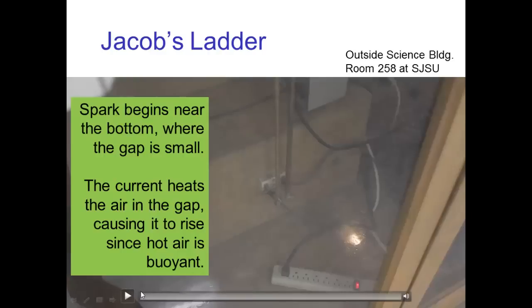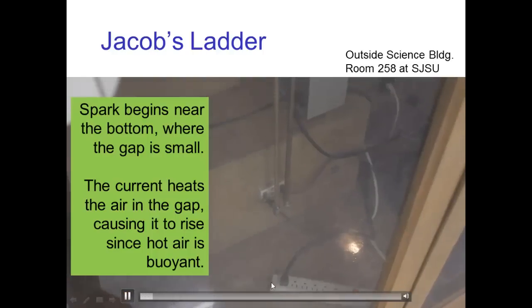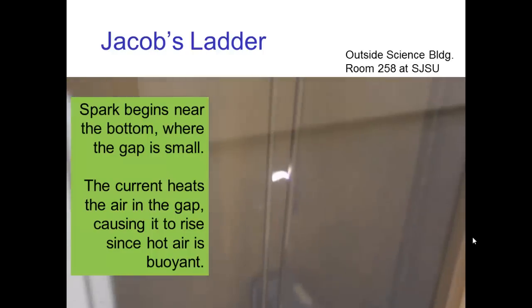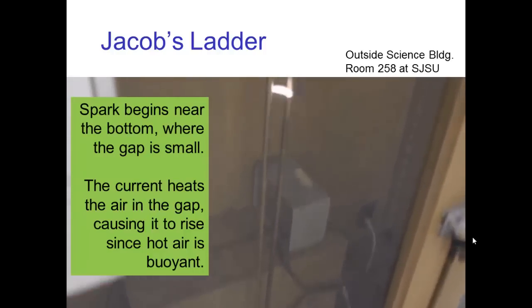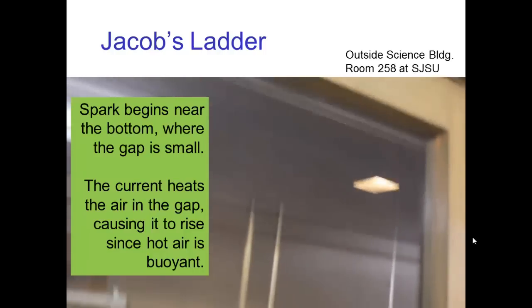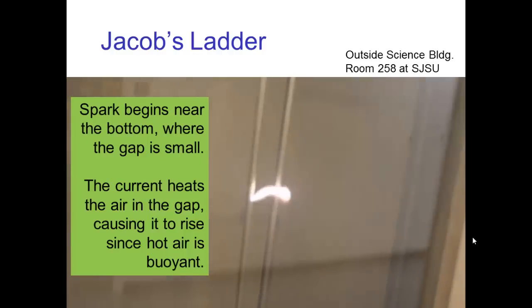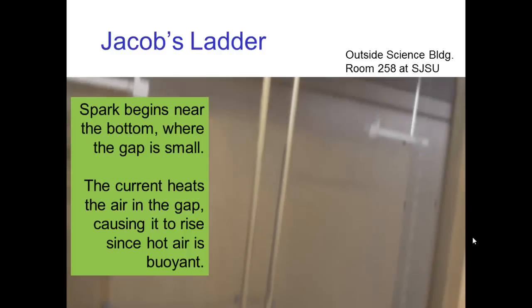Here's another example of ohmic heating. In this case, we have a high voltage between the connectors at the bottom that creates a spark. The spark rises because ohmic heating makes the air hot, and since the hot air is buoyant, the spark rises with the rising hot air from buoyancy.